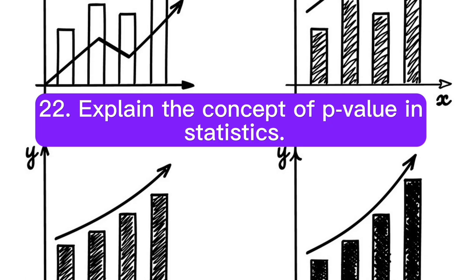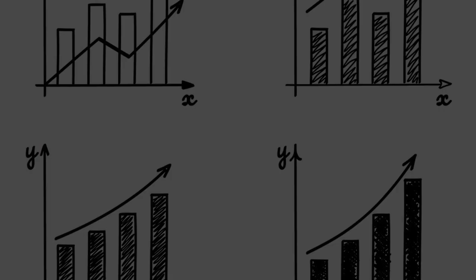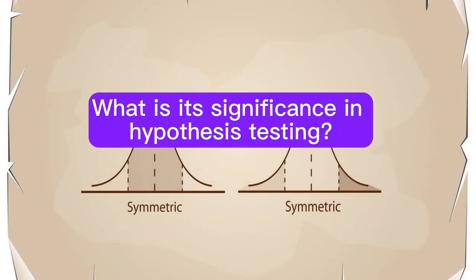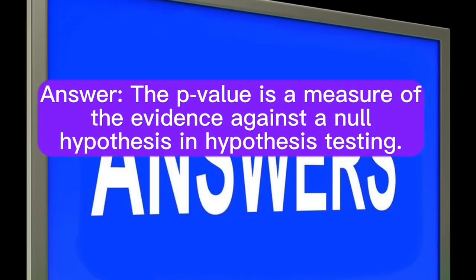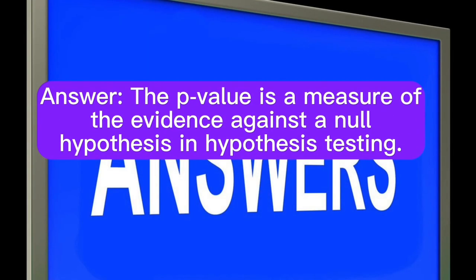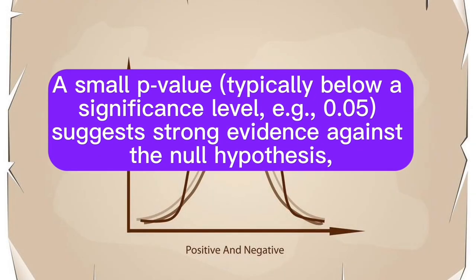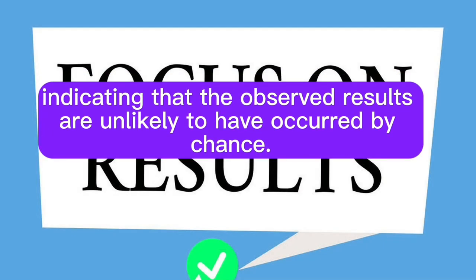Question 22: Explain the concept of p-value in statistics. What is its significance in hypothesis testing? Answer: The p-value is a measure of the evidence against a null hypothesis. In hypothesis testing, a small p-value (typically below a significance level, for example 0.05) suggests strong evidence against the null hypothesis, indicating that the observed results are unlikely to have occurred by chance.